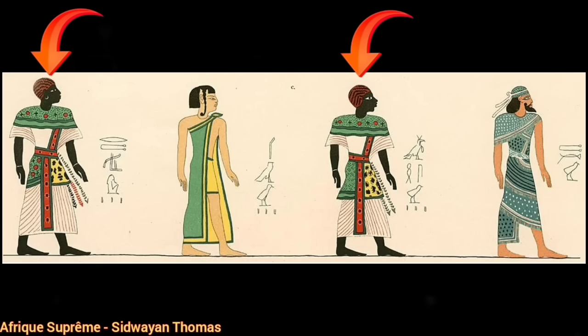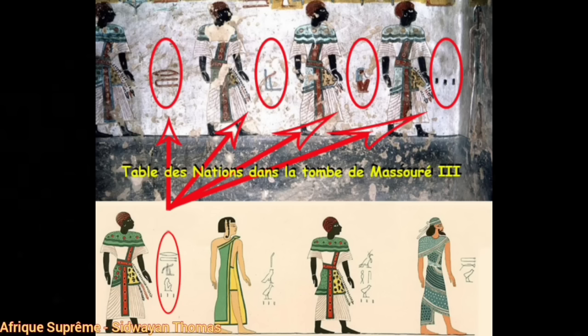Avant d'aller plus loin, nous allons vérifier la véracité de cette table des nations en la comparant avec une autre. Sur cette nouvelle image, nous avons deux tables des nations : la première, celle qui est en haut, provient de la tombe du pharaon Massiré III (Ramsès III), et la deuxième, en dessous, provient de la tombe du pharaon Massiré II (Ramsès II). Si vous comparez les hiéroglyphes représentant l'ancien égyptien dans les deux tombes, vous constaterez qu'ils sont exactement les mêmes. Cela confirme que la table des nations de Massiré II est correcte, et que la représentation physique des anciens égyptiens et des Nubiens est identique selon les différentes époques.